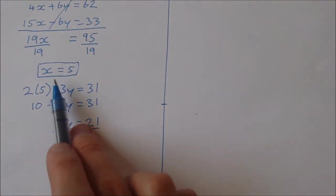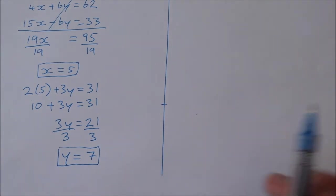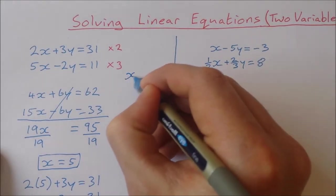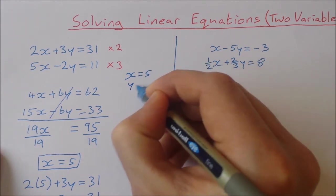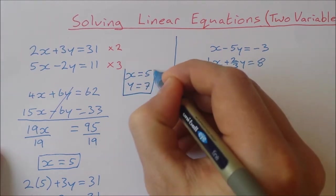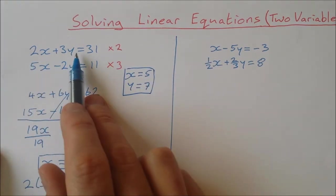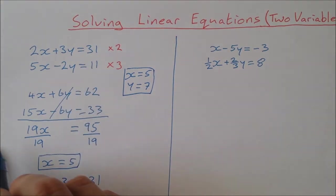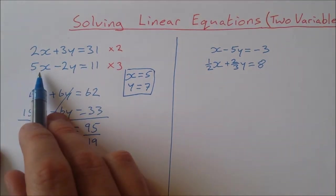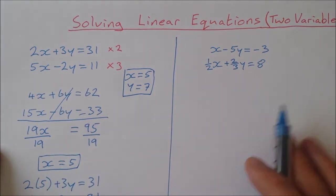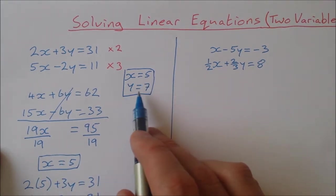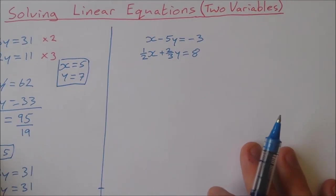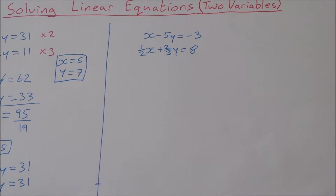So my two solutions are x equals 5 and y equals 7. To check, I can substitute both values into the original equations. 2 times 5 plus 3 times 7 gives us 31, and 5 times 5 minus 2 times 7 gives us 11. So x equals 5 and y equals 7 works for both equations.